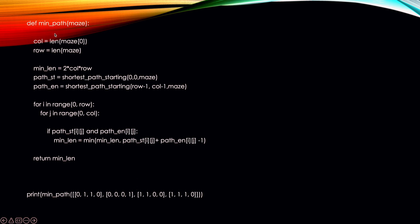We utilize that shortest path function inside the min_path function. We take the maze as input and initialize min_length to columns × rows × 2, which is greater than the maximum possible path length. We find the shortest path starting from (0,0) and from the ending point (row-1, column-1). For every cell in the maze, we check whether it is reachable from both the starting and ending points. Since we are allowed to remove one blocker, it doesn't matter whether the cell is blocked or not — we update min_length with the minimum of min_length and the sum of the two path lengths minus one. Finally, we return min_length.